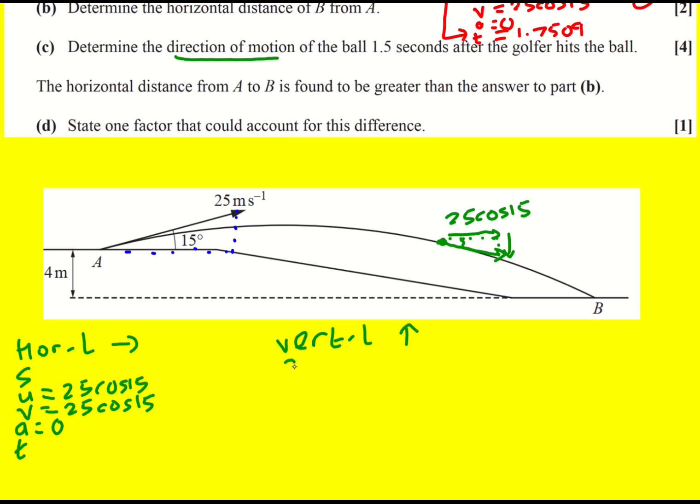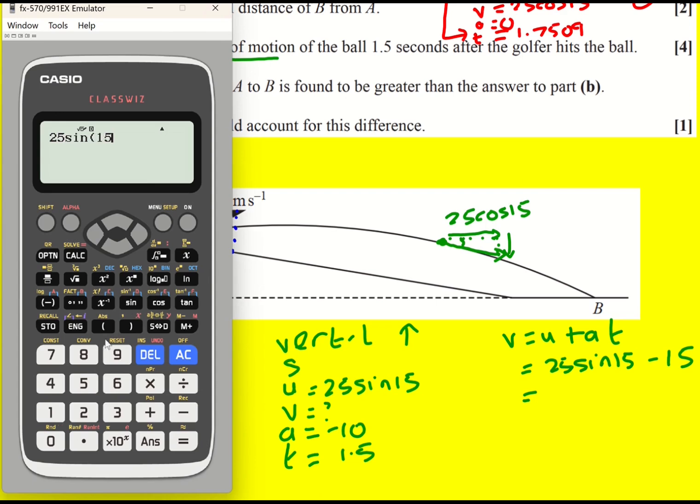Still going to apply SUVAT, I think. U is again 25 sin 15. A is going to be minus 10. And we're told the time 1.5. So anything that's missing is V. So I'm going to use V equals U plus AT. And it's going to be minus 10 times 1.5. Actually, that's just minus 15. I'm expecting this to be negative, by the way, because the halfway point would be, it's not symmetrical because I'm actually going down by four. But still, the halfway point is going to be about half of 1.75. So I get minus 8.5295.